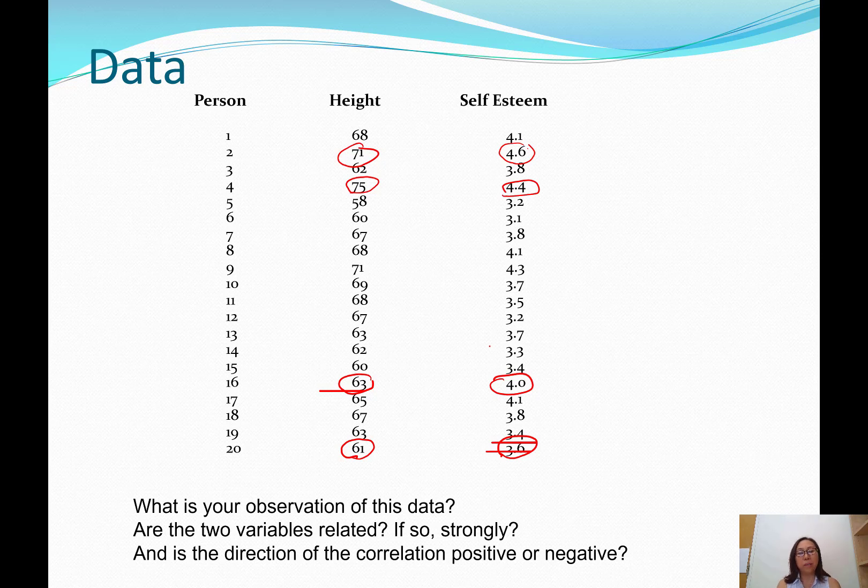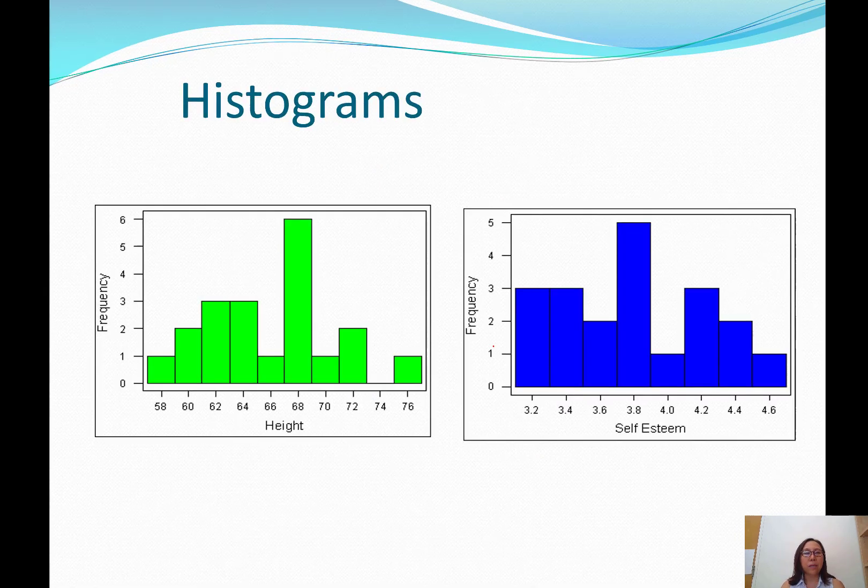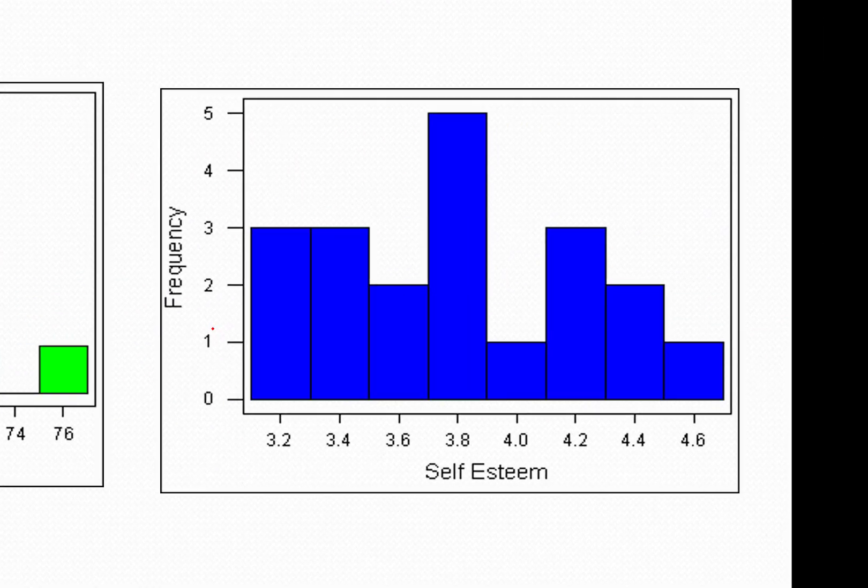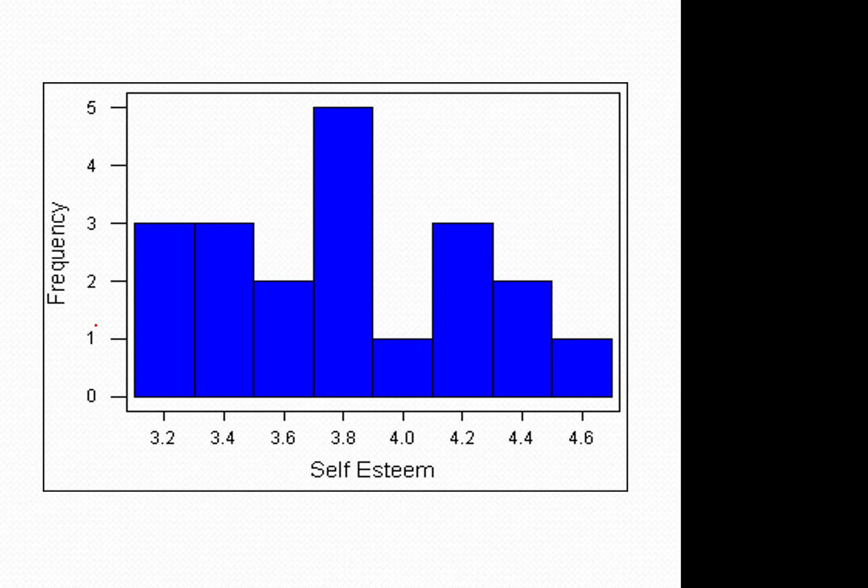We could stare at this data forever and contemplate whether the correlation or the relationship is high or low, or we could do maybe a scatter plot to see what the two variables look like. Before we did the scatter plot, I created a graph separately, one for height and one for self-esteem, just to see what the data looks like. Here we have in the first graph a histogram of height, then the histogram of self-esteem.